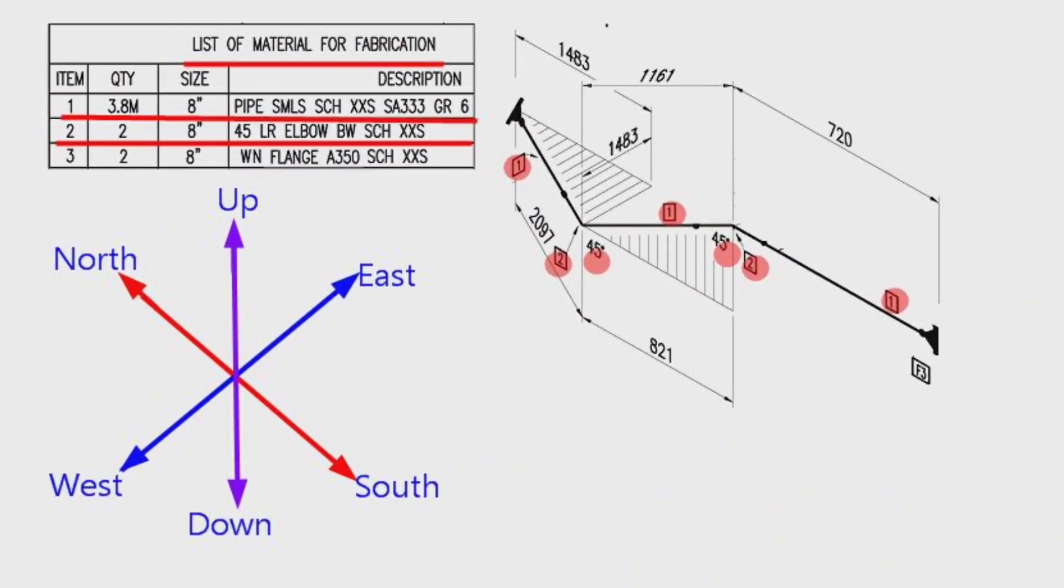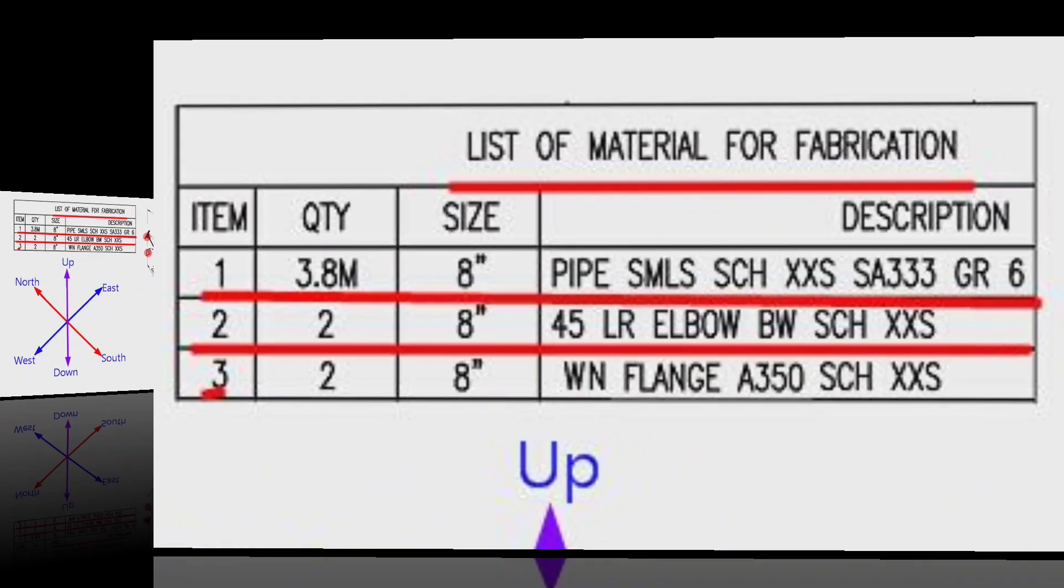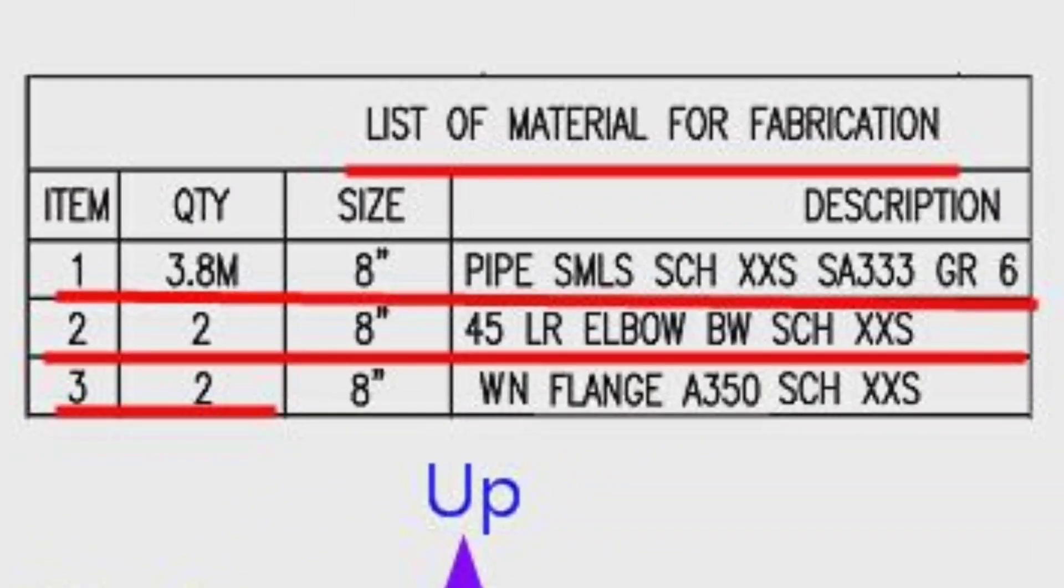Detail number 3 was used in two places also in the pipe drawing. Let's look at the material list. The item number 3: the quantity is 2 pieces, size is 8 inches, weld neck flange, A350, schedule is XXS.